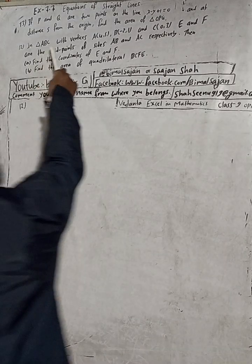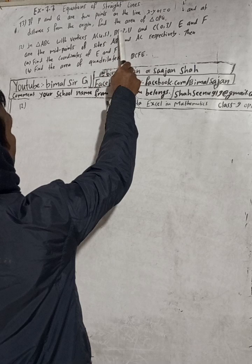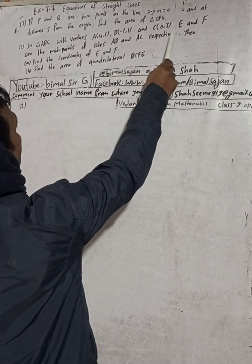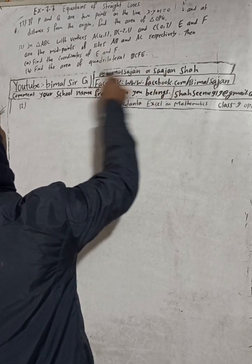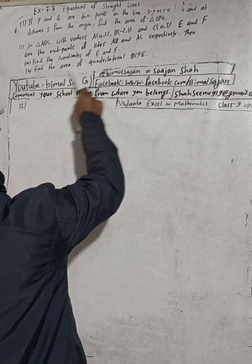Hi class 9 and 10 students, welcome back to Vimal Sharjee's YouTube channel. This is question number 12, exercise 7.7, equations of a straight line, class 9 optional mathematics. The question is: In triangle ABC with vertices A(4,5), B(-2,1), and C(0,3), E and F are the midpoints of sides AB and AC respectively.